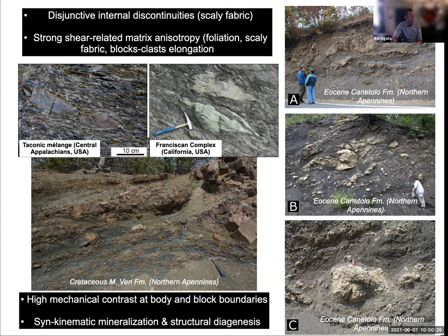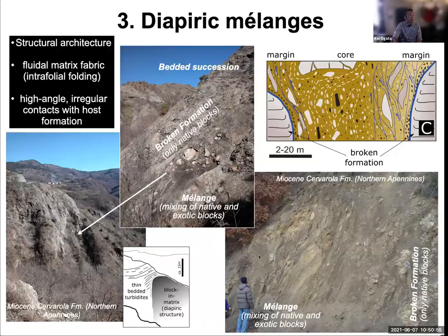For instance, we have disjunctive internal discontinuities like a well-developed scaly fabric, depending on the maturity of the deformation and the burial conditions. All of them are characterized by a strong shear-related matrix anisotropy — foliation, cleavage, block-clast elongation — as represented here. There is high mechanical contrast at the body's margins, so at the contact with the host rock, and also within the melange at block boundaries. Synkinematic mineralization and structural diagenesis basically change the geotechnical characteristics of these melanges as deformation progresses.